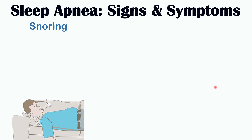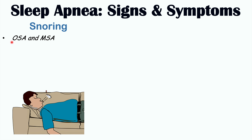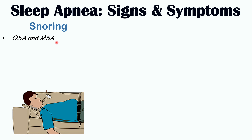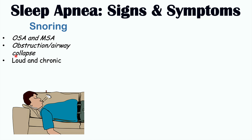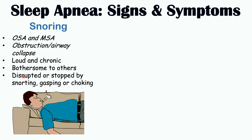Snoring most often occurs in OSA and mixed sleep apnea because of airway obstruction, though it can occur in central sleep apnea as well, albeit less loudly and severely. This snoring is loud and chronic, bothersome to others, and is often disrupted or stopped by snorting, gasping, or choking. The patient can be awoken from sleep gasping for air, experiencing shortness of breath or a choking sensation that disrupts or stops the snoring.